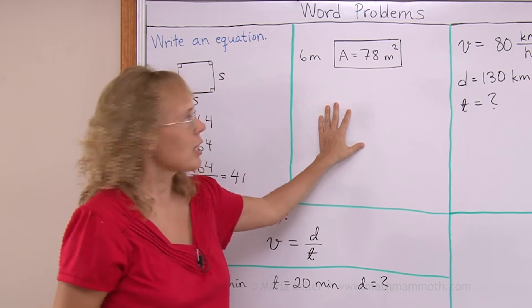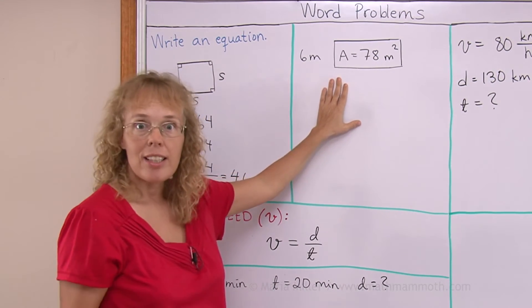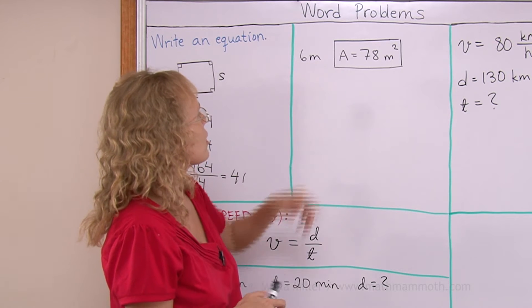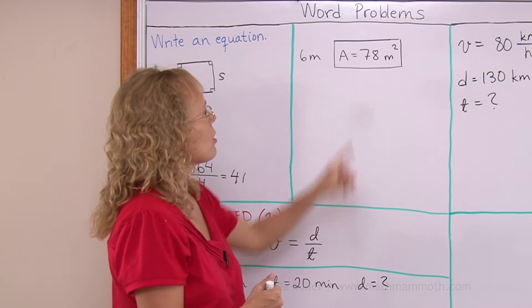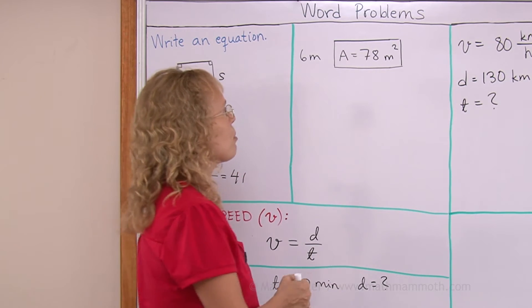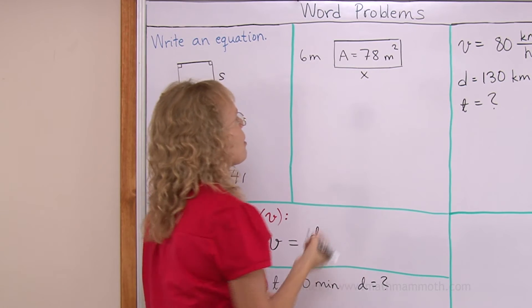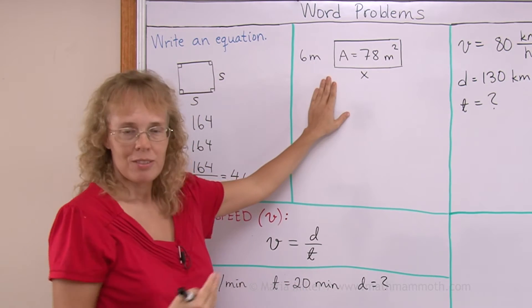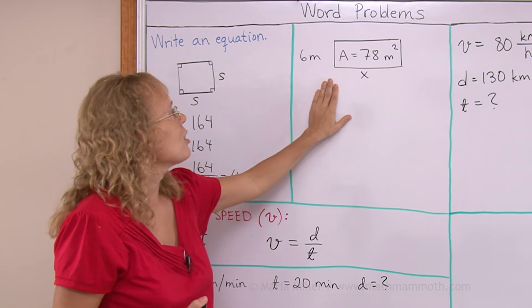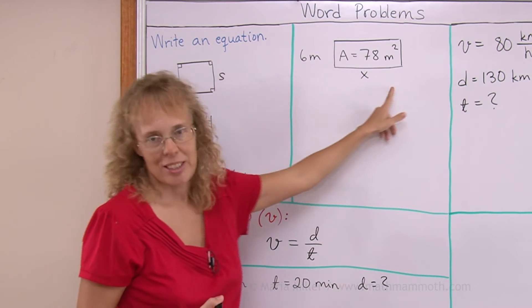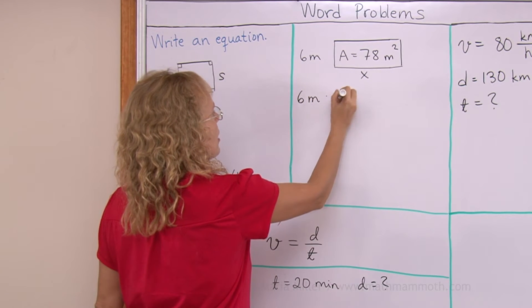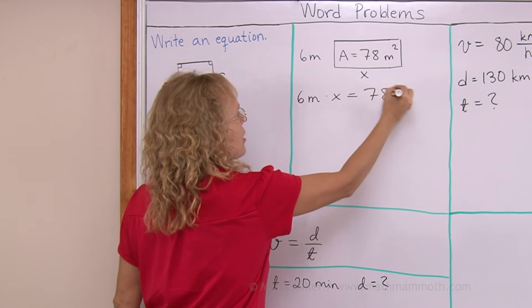Over here, we need to write an equation relating this picture. A means area. It's a rectangle. Its area is 78 square meters. One side measures 6 meters, and we need to find the other side. This side is unknown, so let's denote it by a variable — S or X. To find the area you multiply side by side, so 6 meters times X would give the area. So 6 times X equals 78 is our equation.